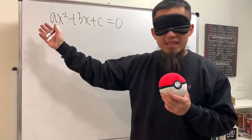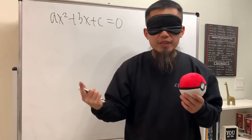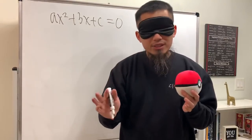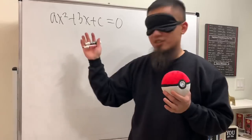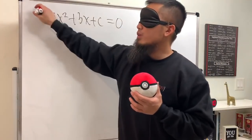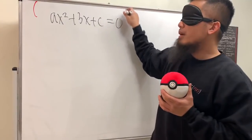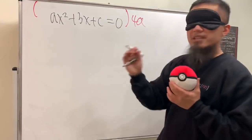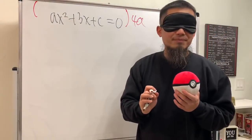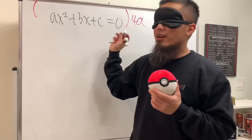Now you might want to divide everybody by a so that we can get a 1 in front of the x squared, right? The truth is you don't have to do that. Check this out, just go ahead and look at this. We are going to multiply everybody by 4a and this is going to work out very nicely.